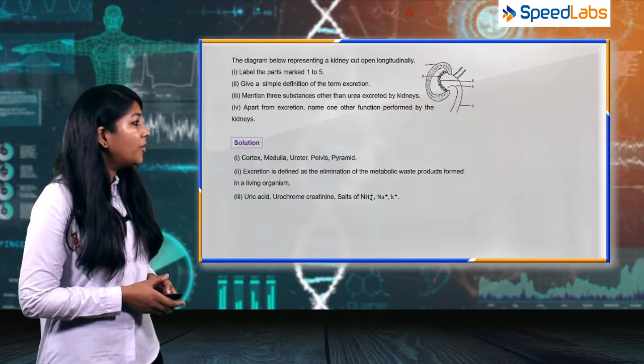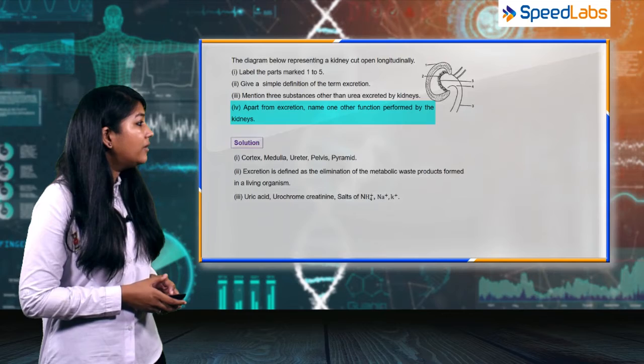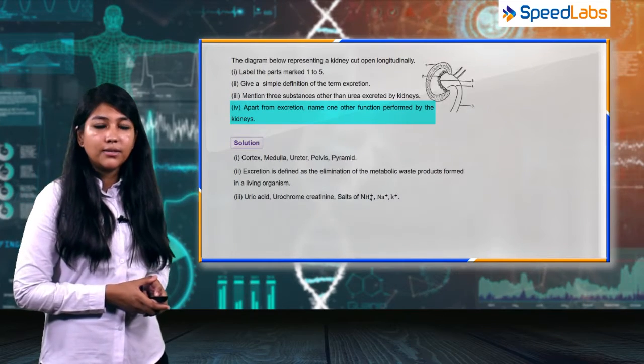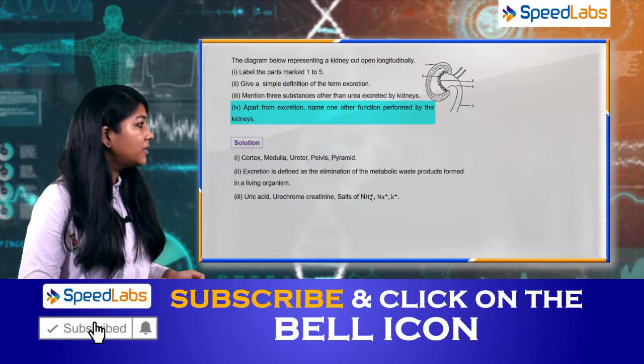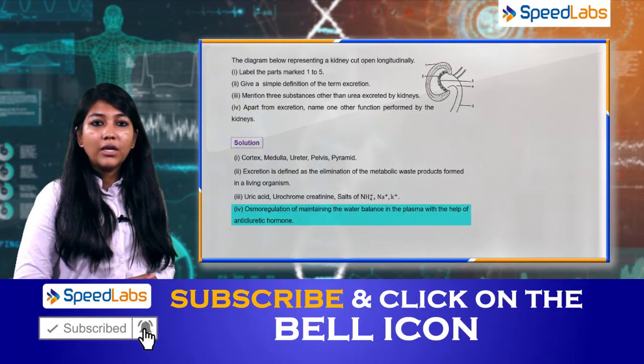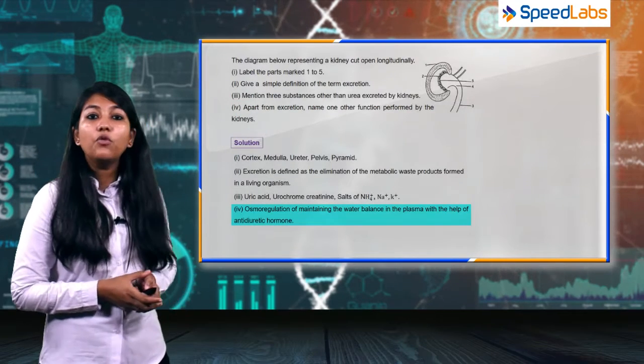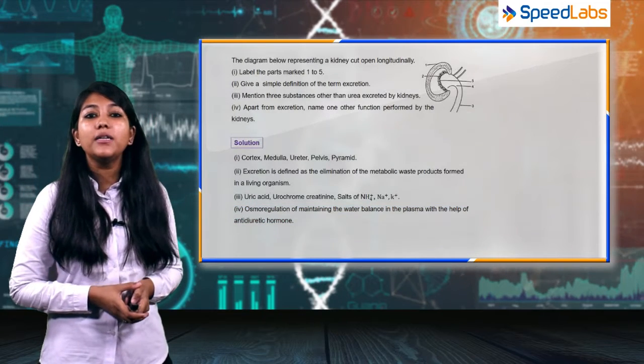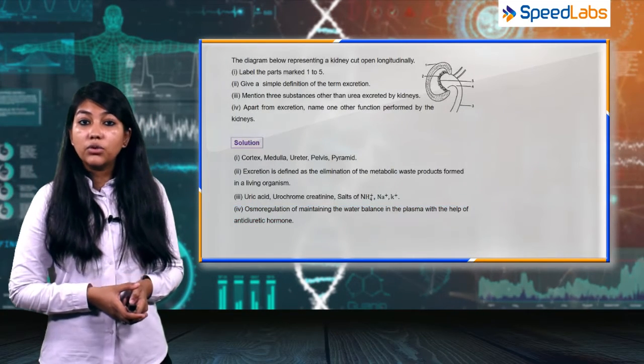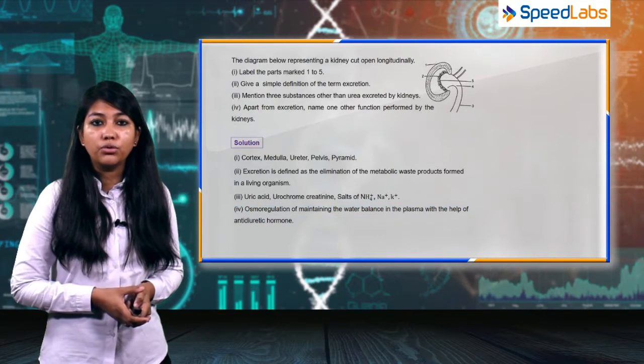Apart from excretion, name one other function performed by kidneys. The answer to this part is osmoregulation. What is osmoregulation? It is basically maintaining the water balance in the plasma with the help of the ADH hormone, the anti-diuretic hormone that is released from the posterior pituitary.